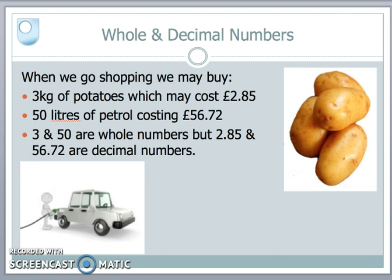The three and the 50 are what are called whole numbers. In mathematics we call them integers. My price is £2.85 and £56.72. And these are decimal numbers because they contain that decimal point.